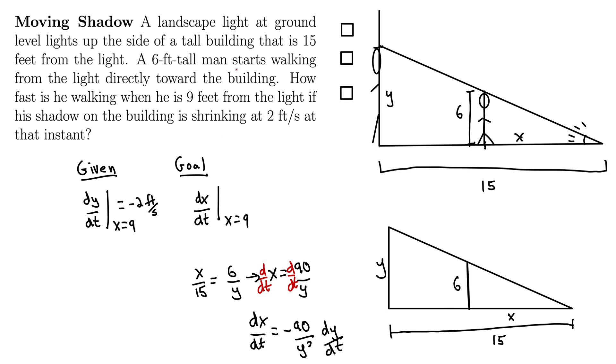So if we can plug in 9 for X, we can then solve that for Y. I'll actually plug it in right here, just trying to solve for Y. So we had 9 equals 90 over Y. So solving that gives us Y equals 10.